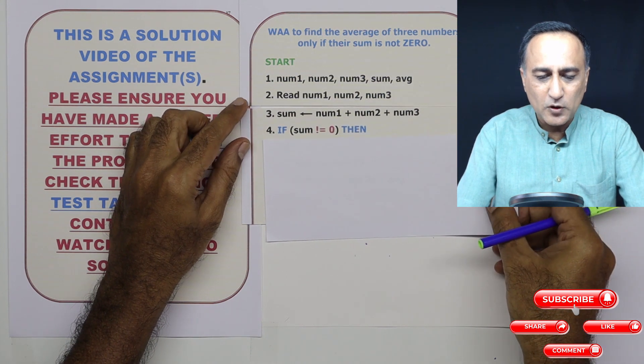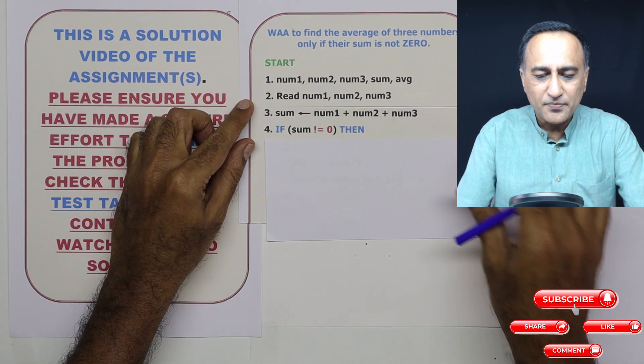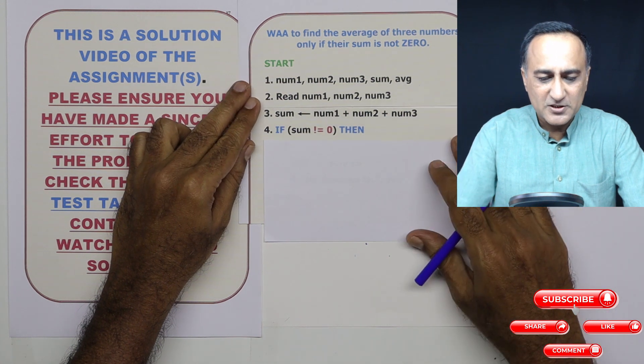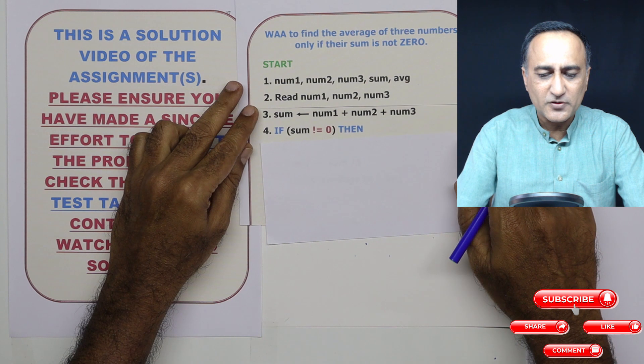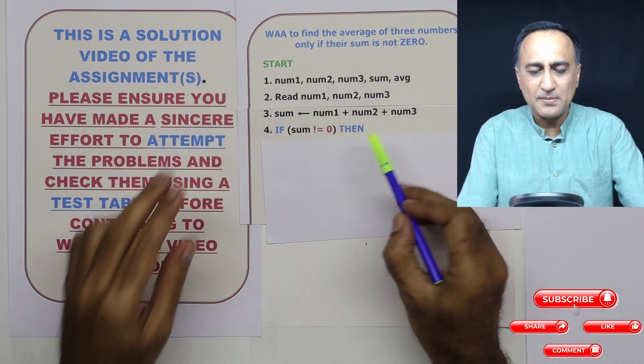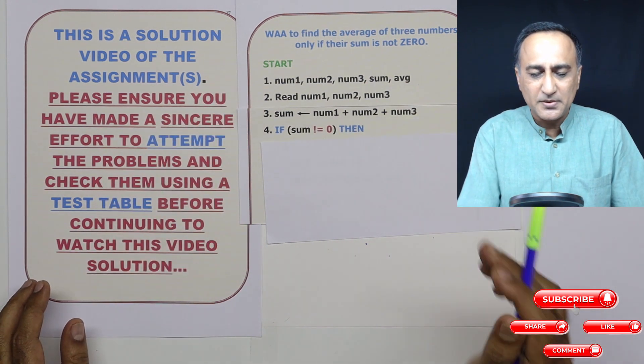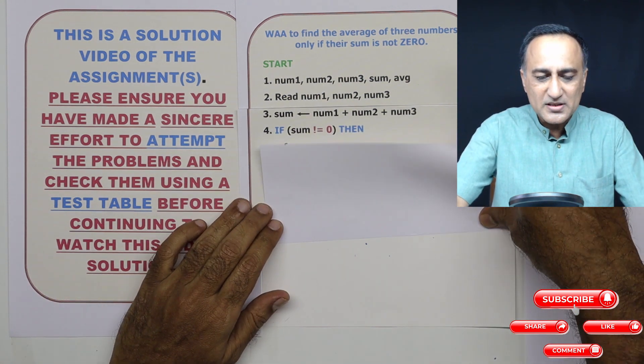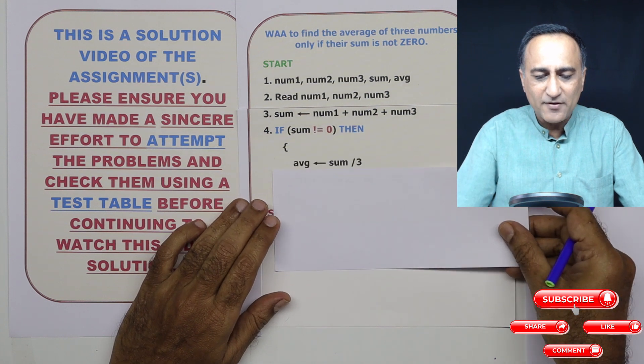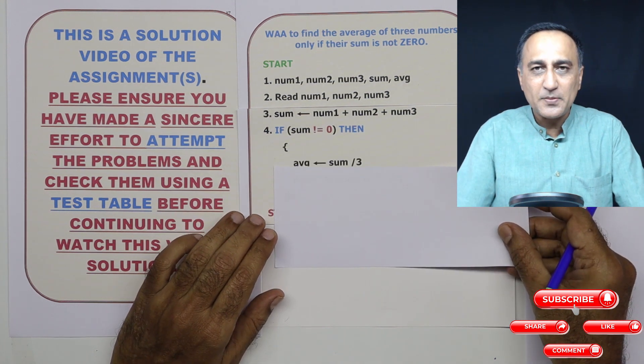The next steps we need to follow are, we need to find the sum first. Once we find the sum, the sum is simply the addition of three numbers num1 plus num2 plus num3. If the sum is not equal to zero, then I am going to calculate average as sum divided by three.